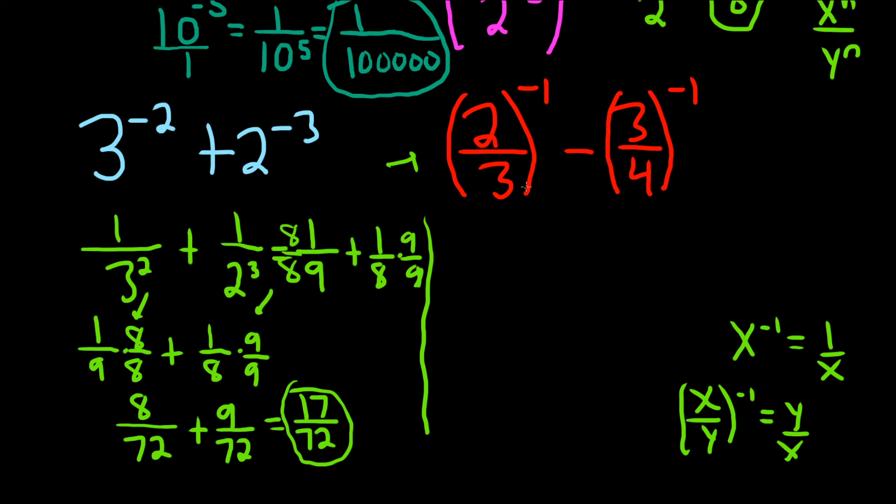That's the fastest way to do something like this, is you just flip it. So this will be 3 over 2, minus 4 over 3.